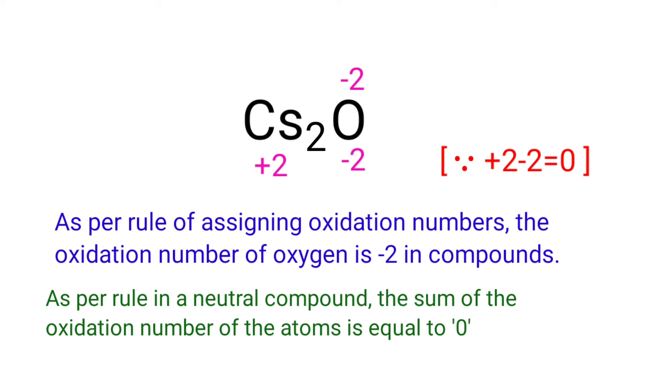In the Cs2 element, there are two Cs atoms present. So we can write the oxidation state of Cs is +1.